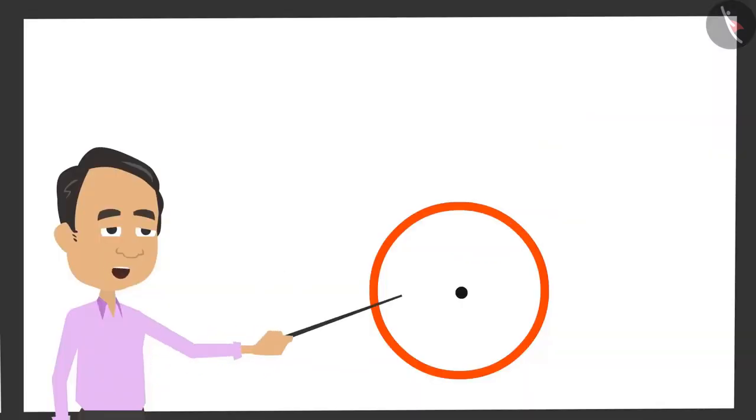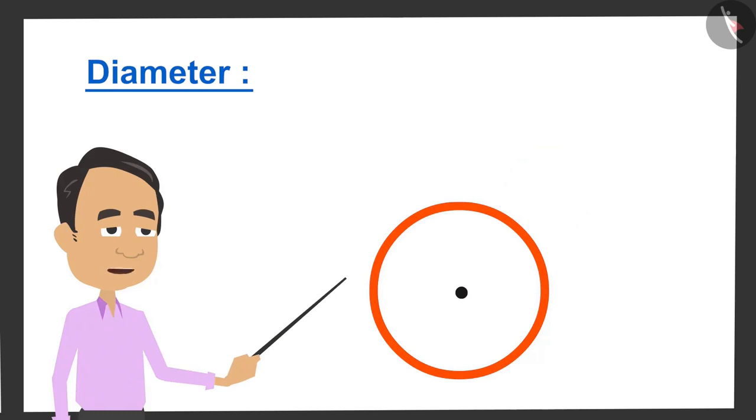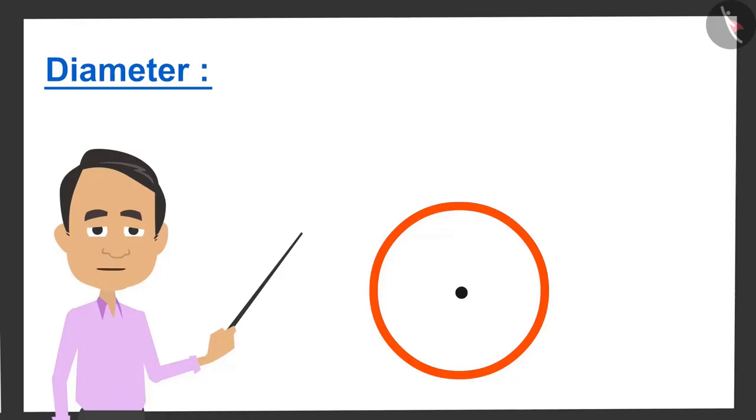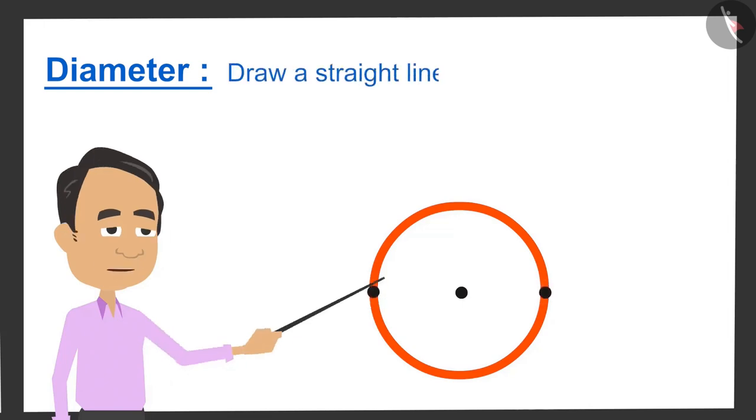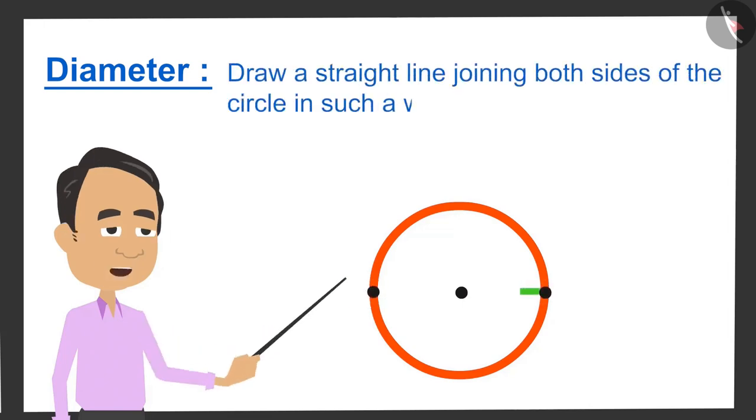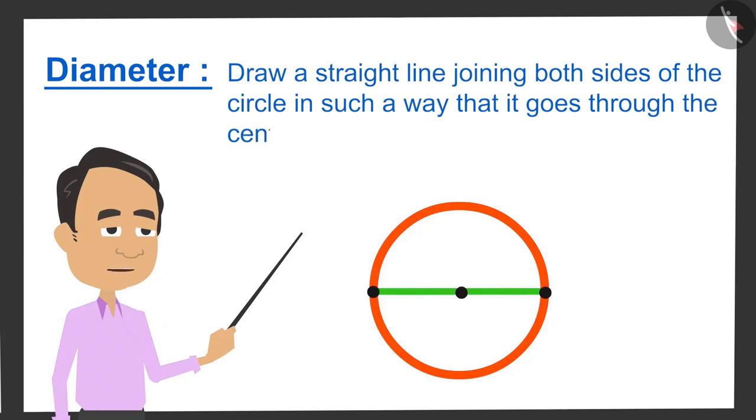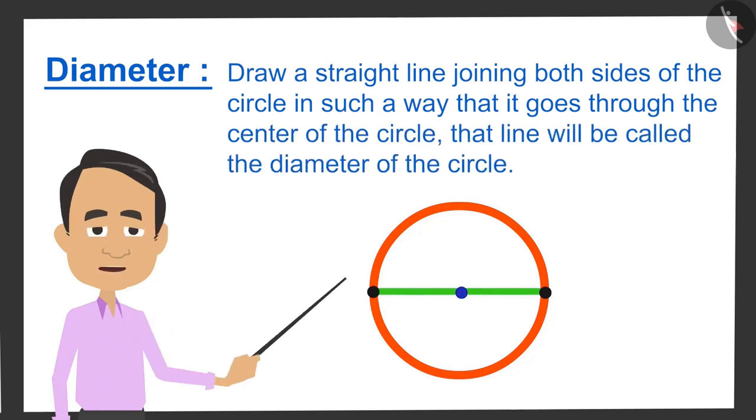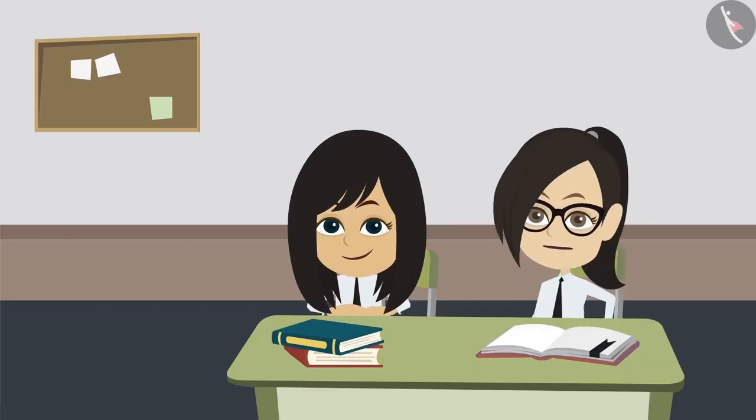The second property of a circle is the diameter. What is a diameter? If we draw a straight line joining both sides of the circle in such a way that it goes through the center of the circle, then that line will be called the diameter of the circle. This means that we have to measure its diameter to measure the circle.